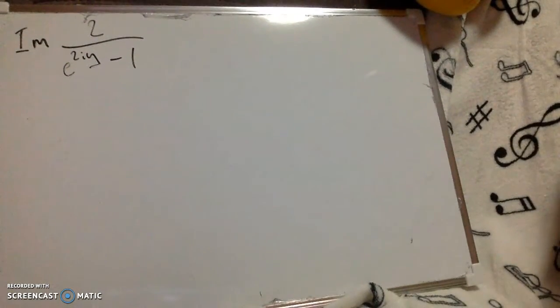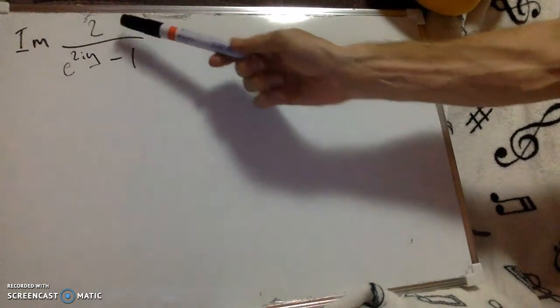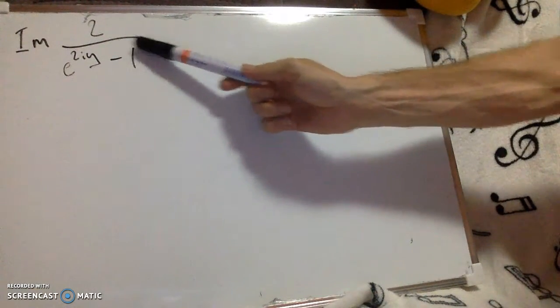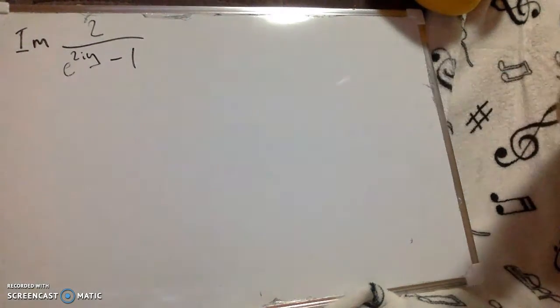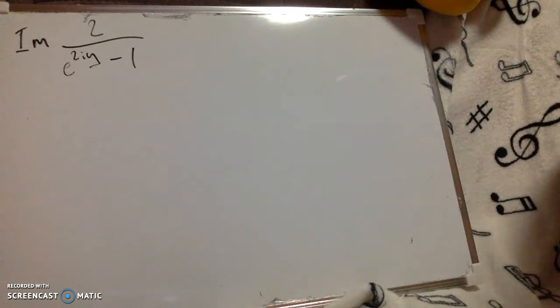And that is to notice that if we multiply top and bottom by e to the minus i y, then we get something familiar, namely something which looks very similar to sine y.